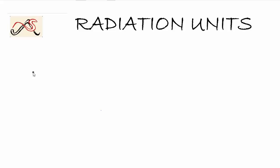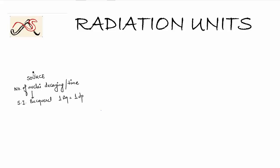Let us assume that there is a source of radioactivity — a source that is emitting radiation. How do you quantify that? We quantify it using the number of nuclei that are decaying per unit time. The SI unit of radioactivity is Becquerel, and 1 Becquerel is equal to 1 disintegration per second.